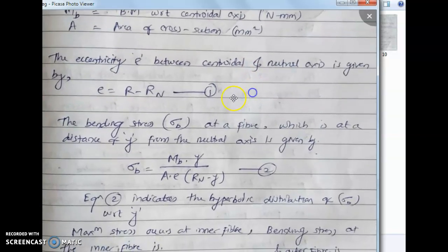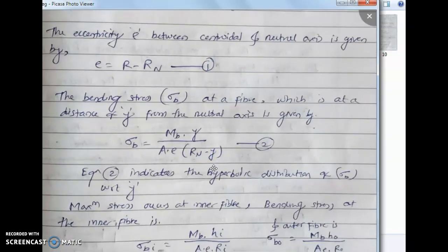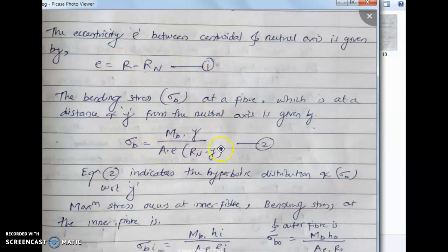The eccentricity e between the central axis and neutral axis is given by e = R minus R_N, where R is the radius of the central axis. The bending stress sigma_B at a fiber at a distance y from the neutral axis is given by: sigma_B = M_B × y / (A × e × R_N minus y). This is equation 2, and it indicates the hyperbolic distribution of sigma_B with respect to y.